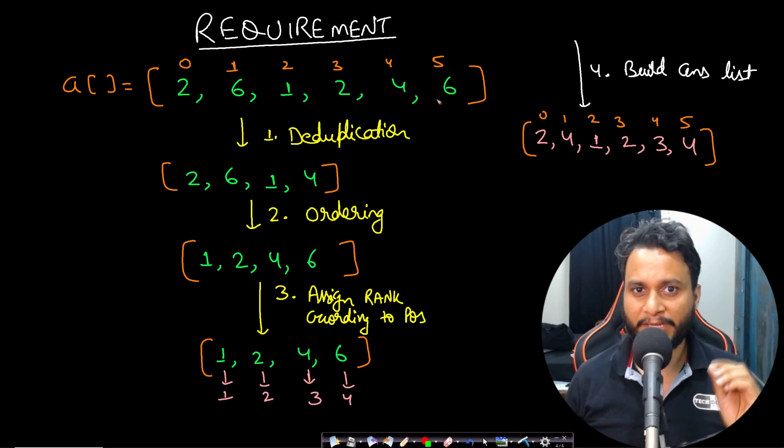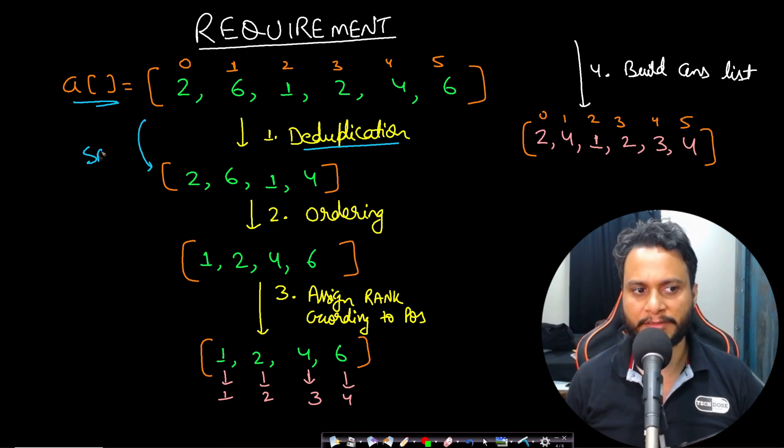Now let's look at the step by step requirement of the problem. In this case, given the input array, first we need to do deduplication, that means remove all the duplicate items. So this step can be performed by using a set. You can take an unordered set.